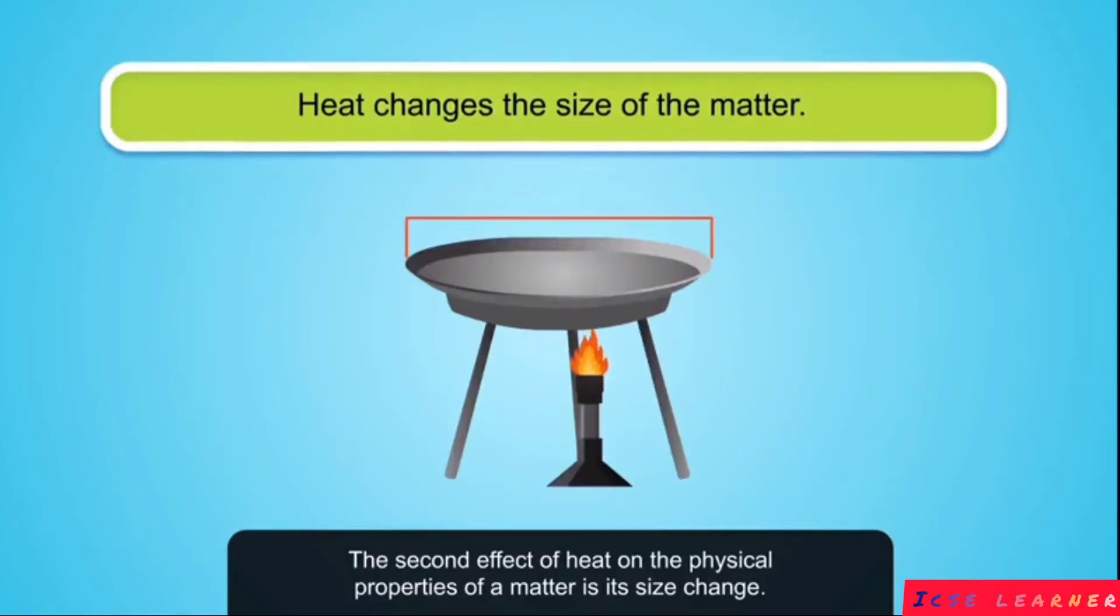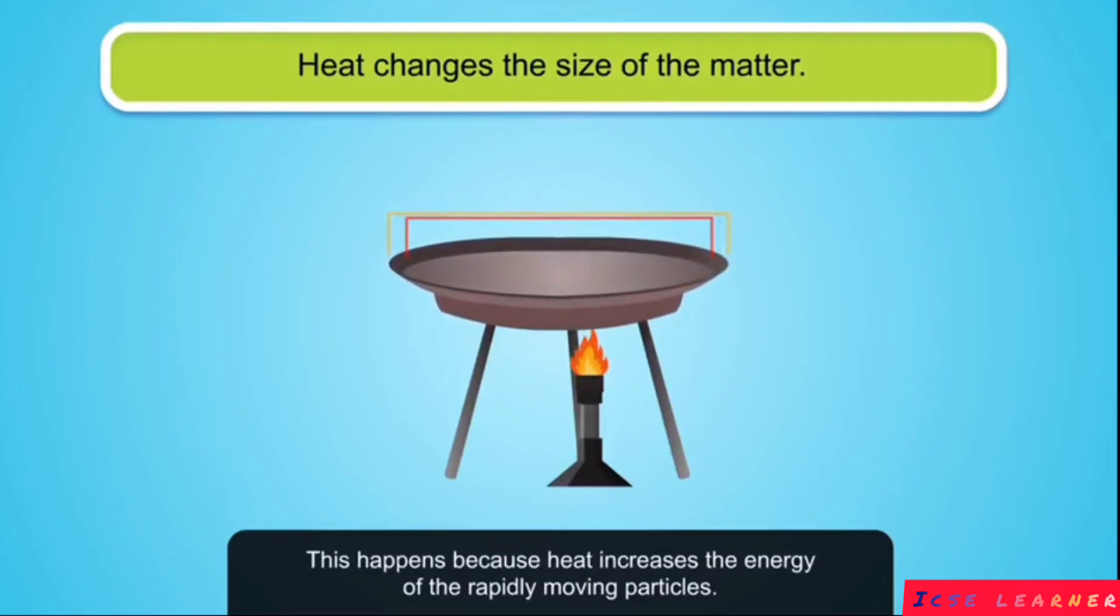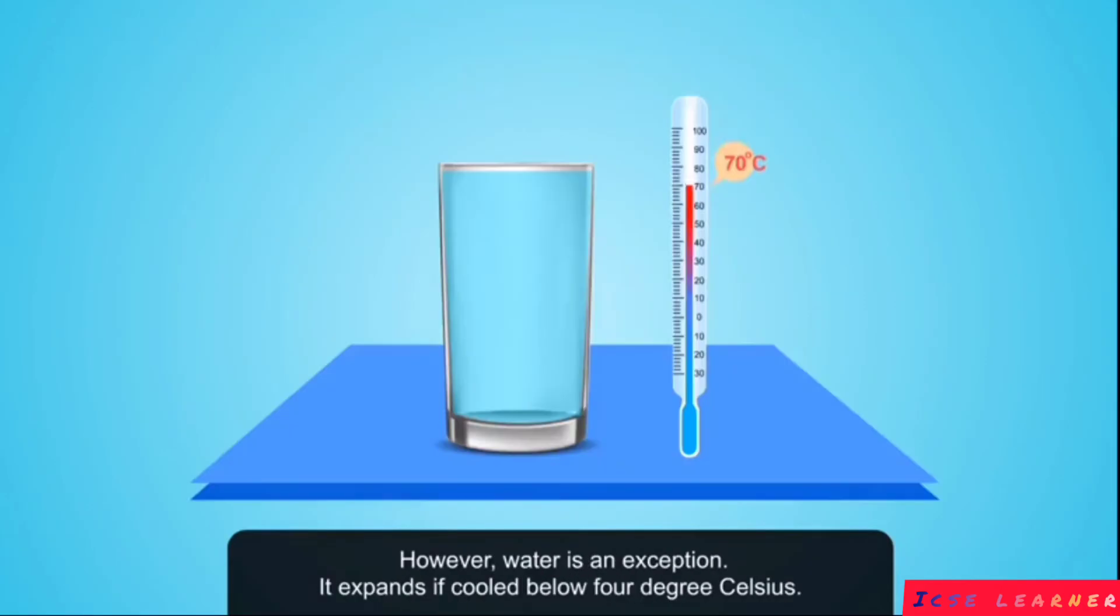The second effect of heat on the physical properties of a matter is its size change. As heat is supplied, the matter expands. This happens because heat increases the energy of the rapidly moving particles. However, water is an exception. It expands if cooled below four degrees Celsius.